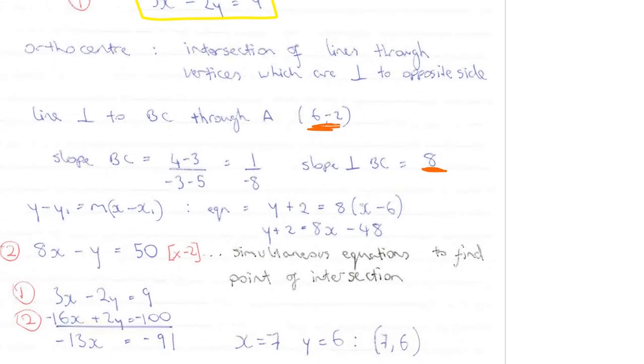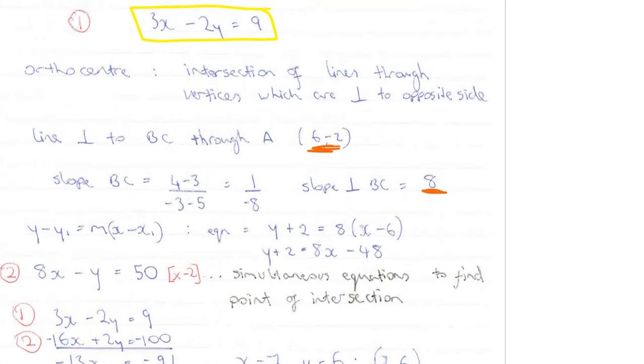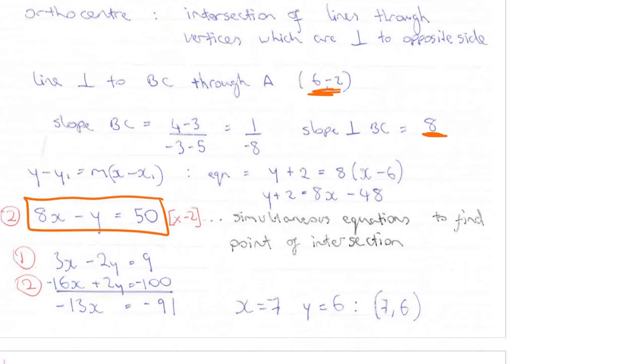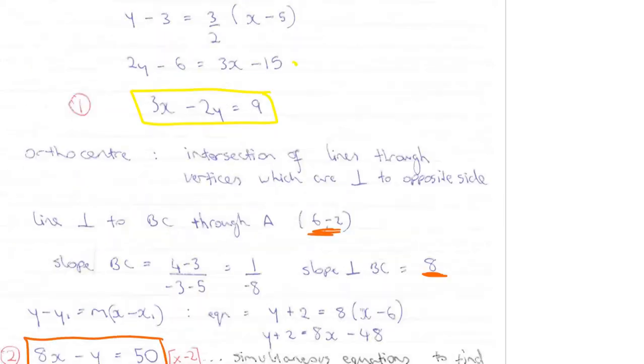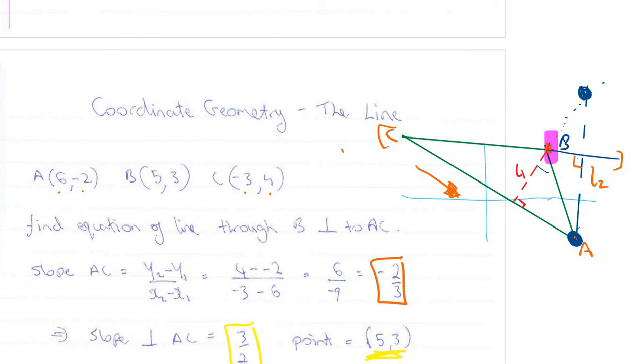To work out the orthocenter then, I need to just carry out simultaneous equations with 1 and 2. So that's equation 1. This is equation 2. If I multiply it by minus 2 to cancel out the y's, I'm left with minus 13x is equal to minus 91. So x is 7, y is 6. So my orthocenter, which is the point of intersection of those two lines, is 7 and 6. Which I'm not surprised, it's outside my triangle here. So that's the point (7,6).